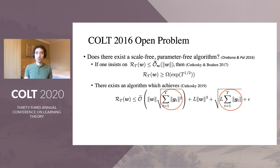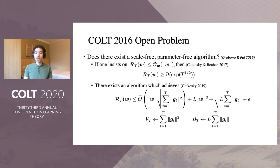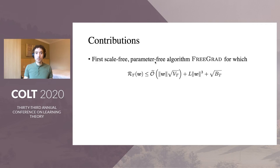To simplify notation, I introduce Vt — the sum of the squared norms of the gradients — and Bt — the sum of the norms of the gradients. Our first contribution is the first scale-free parameter-free algorithm, which we call FreeGrad, which has this regret bound. This algorithm doesn't assume any bound on the domain and adapts to the Lipschitz constant L. The price we pay for this level of adaptivity is a lower order term circled in red.